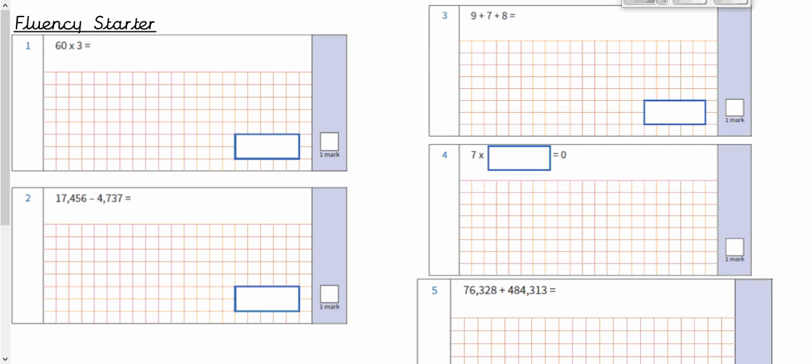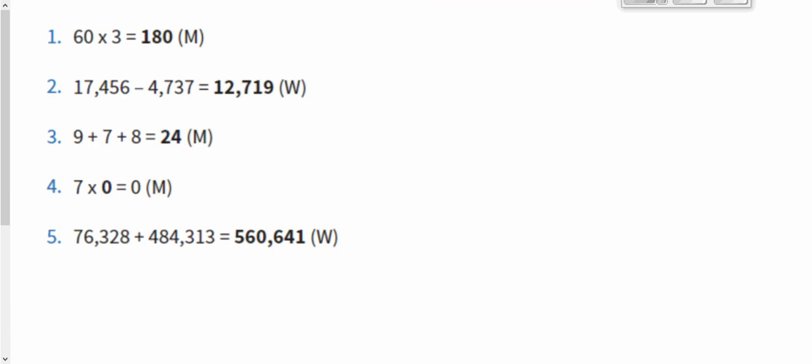And then hopefully we're unpaused. We'll go through some answers. So question number one was 60 times 3. That was a mental method because all you really had to do was forget the zero. 6 times 3 is 18. Put your zero back on for 180.